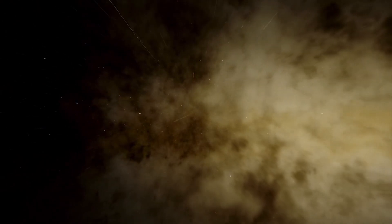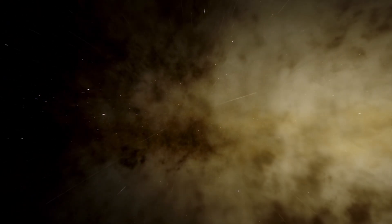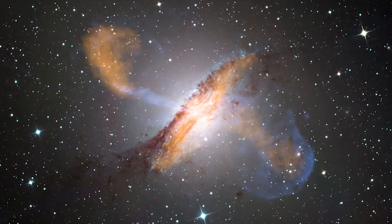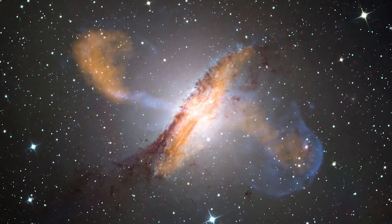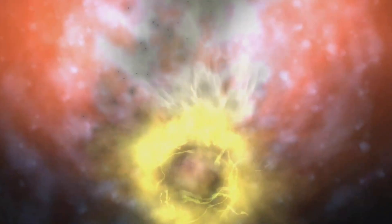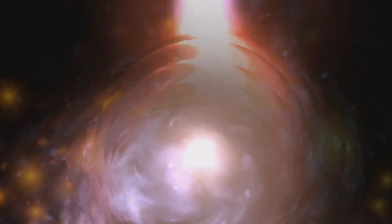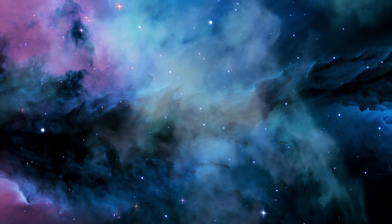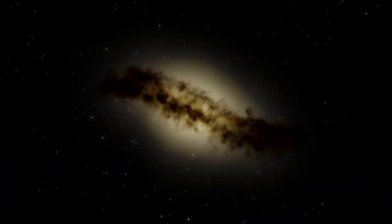Another unusual feature of Centaurus A is its appearance. It is classified as a peculiar galaxy, which means that it does not fit into the traditional classification scheme of spiral or elliptical galaxies. Centaurus A has a distorted shape, with a bright central region surrounded by a dark band of dust and gas. The galaxy's distorted shape is thought to be the result of a merger between two galaxies, which caused a violent collision that disrupted the galaxy's structure.